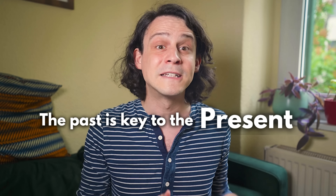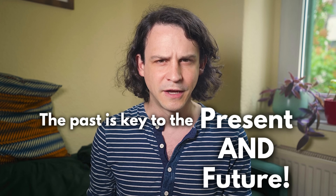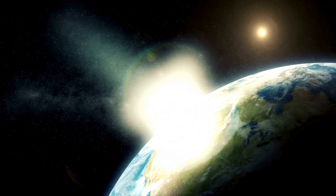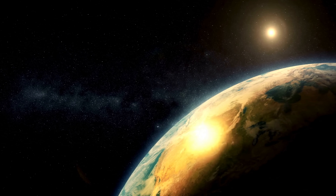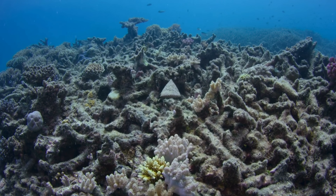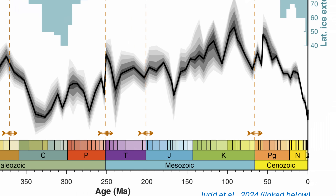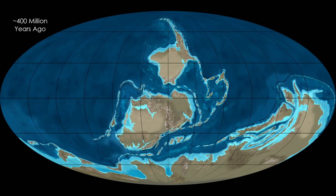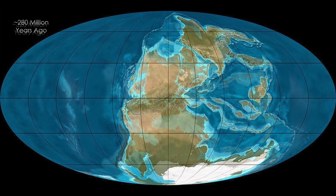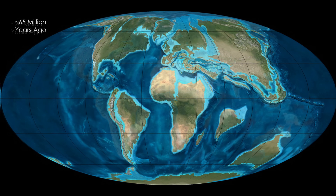As Rachel has said many times before, the past is key to the present and the future. Climate scientists have learned huge amounts about what we're in store for by studying ancient climates. This not only helps us understand why the climate changes, but what happens to the atmosphere, to oceans, to life, when it does.